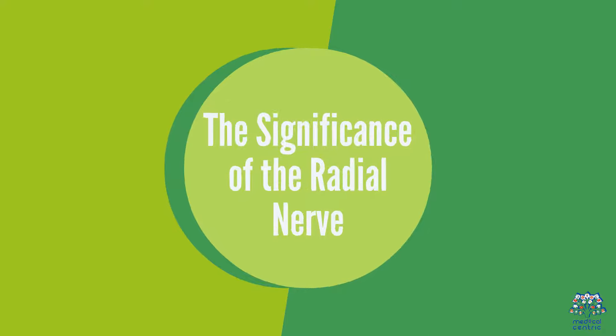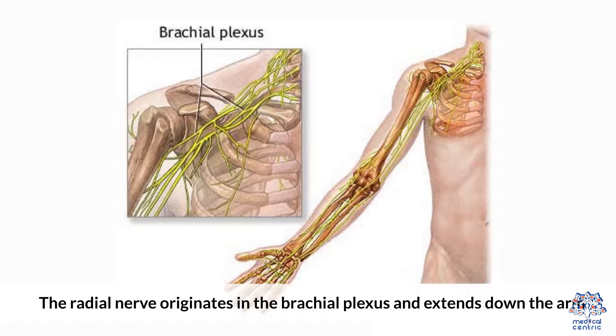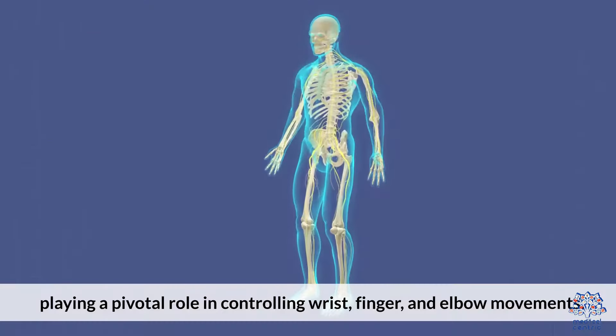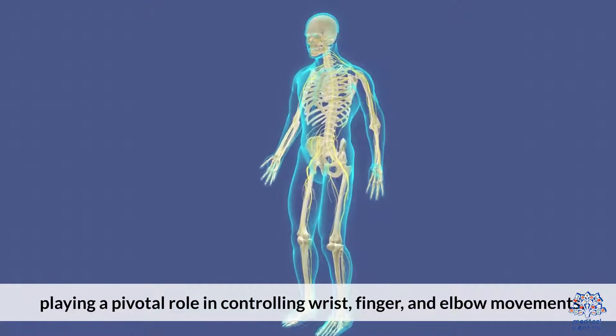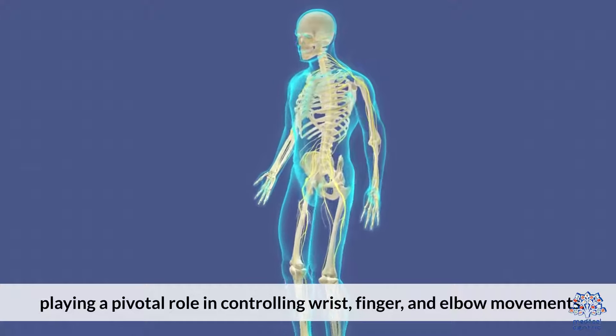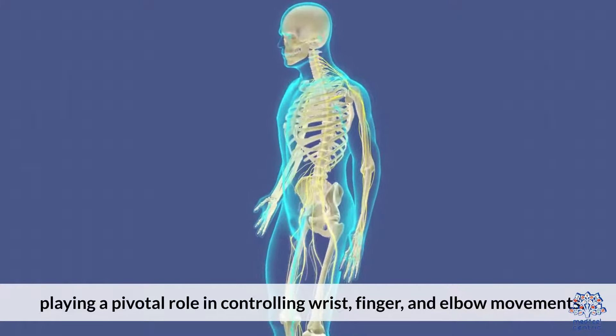The Significance of the Radial Nerve: The radial nerve originates in the brachial plexus and extends down the arm, playing a pivotal role in controlling wrist, finger, and elbow movements.